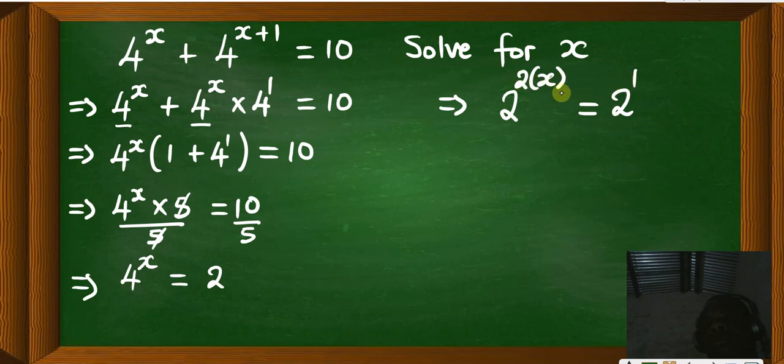So 2 times x, which is 2x, is going to be equal to 1 there. Then here we will get rid of the 2 to remain with x.